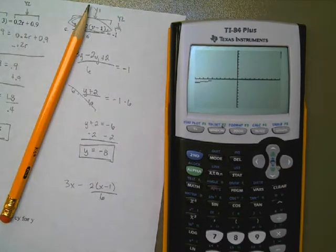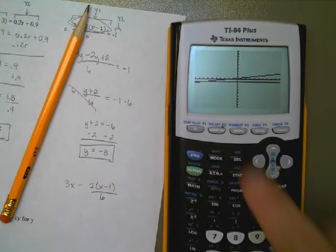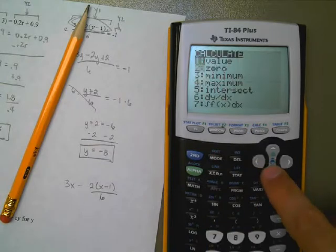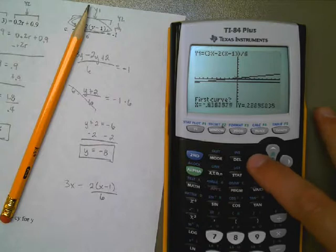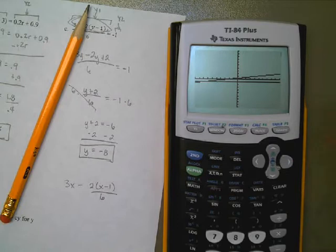So let's graph that. There is the first line. And then there's that negative 1 line, Y2. It looks like they meet up somewhere over here. Second, calculate. Calculate where they intersect. Come over here. They meet somewhere in this region. That's good enough. I'm going to hit enter, enter, enter. And they meet at negative 8. How about that?